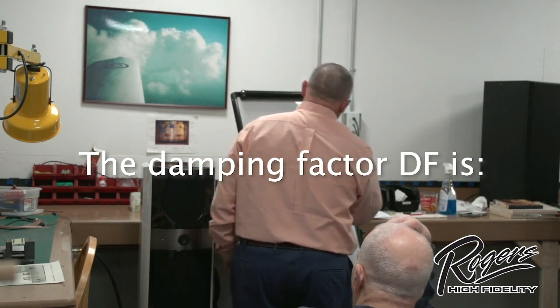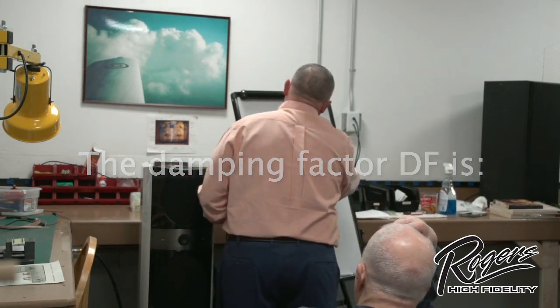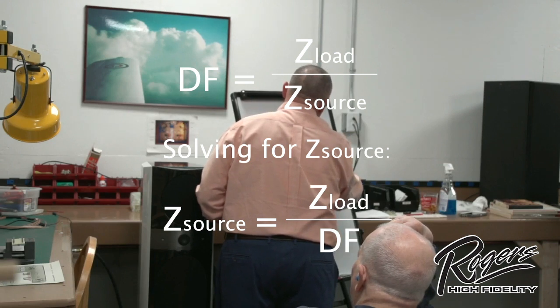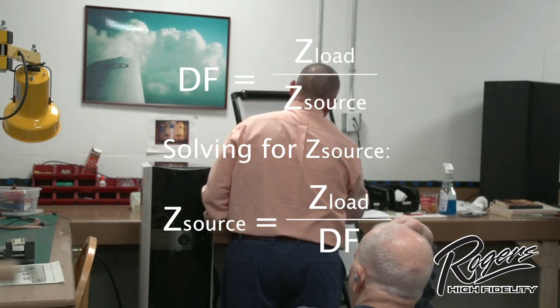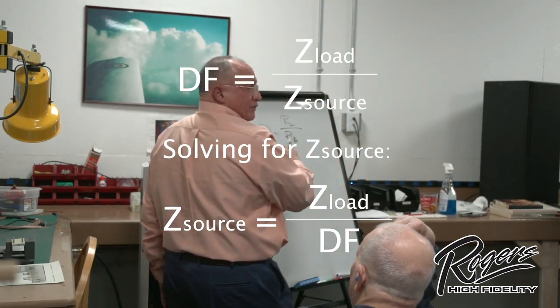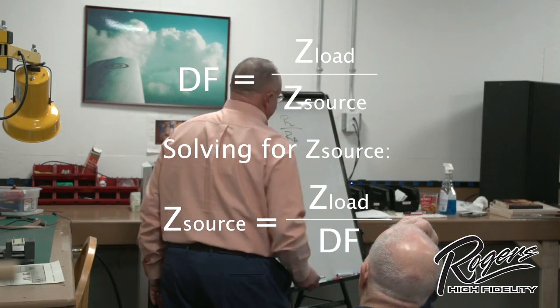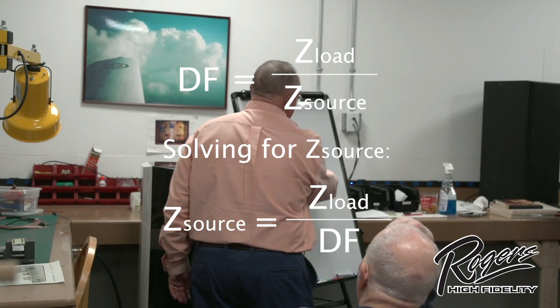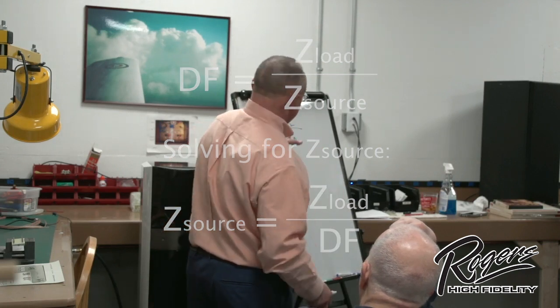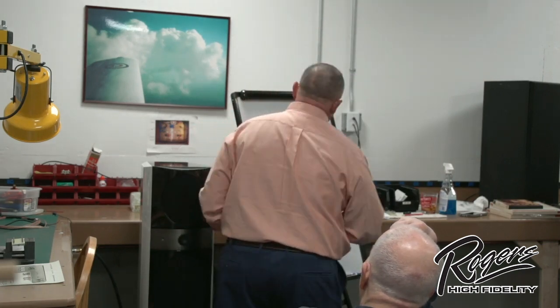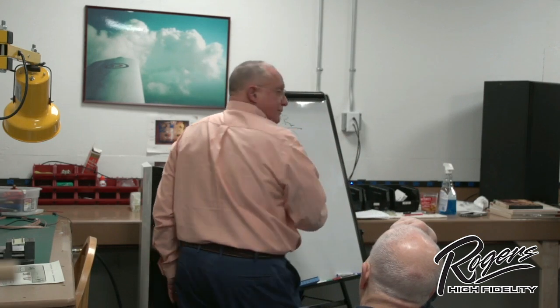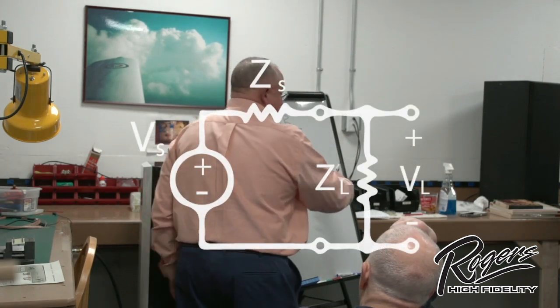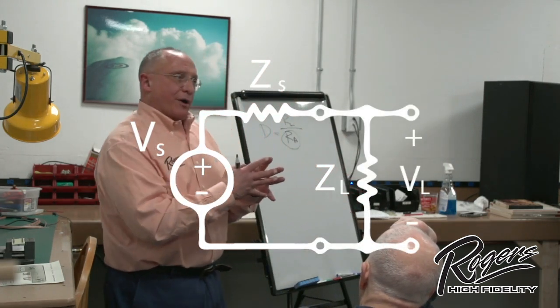Damping factor is equal to the load impedance, speaker impedance, over the amplifier impedance. And for the sake of making it simple, we'll assume they're both resistive. So the lower the amplifier impedance, the higher the damping factor, just a simple ratio. Amplifier impedance is the output impedance of the transformer as it looks into the vacuum tube.